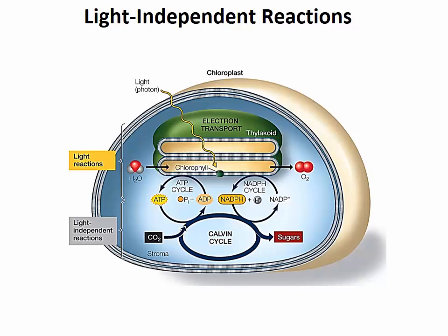The light-independent reactions are also known as the Calvin cycle. Notice here that the cycle does not use sunlight directly, but it requires the ATP and NADPH produced in the light reactions. Therefore, the Calvin reactions require light indirectly and take place only in the presence of light.